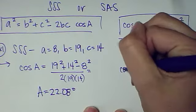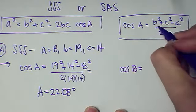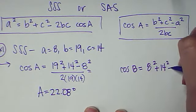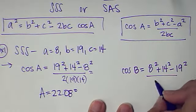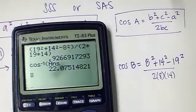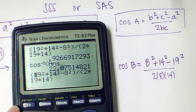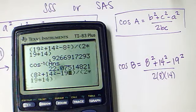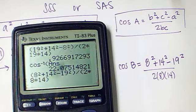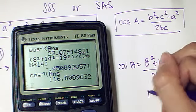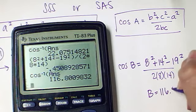To find our next angle, we could do the cosine of B equals. And instead of putting B, we're going to put A. So, 8 squared, plus C squared, which is 14 squared, minus 19 squared, because that's our B, over 2 times 8 times 14. Those are coming from right here. If I plug that into my calculator, plug that in and do second cosine, second answer. I get that angle B is equal to 116.80 degrees.